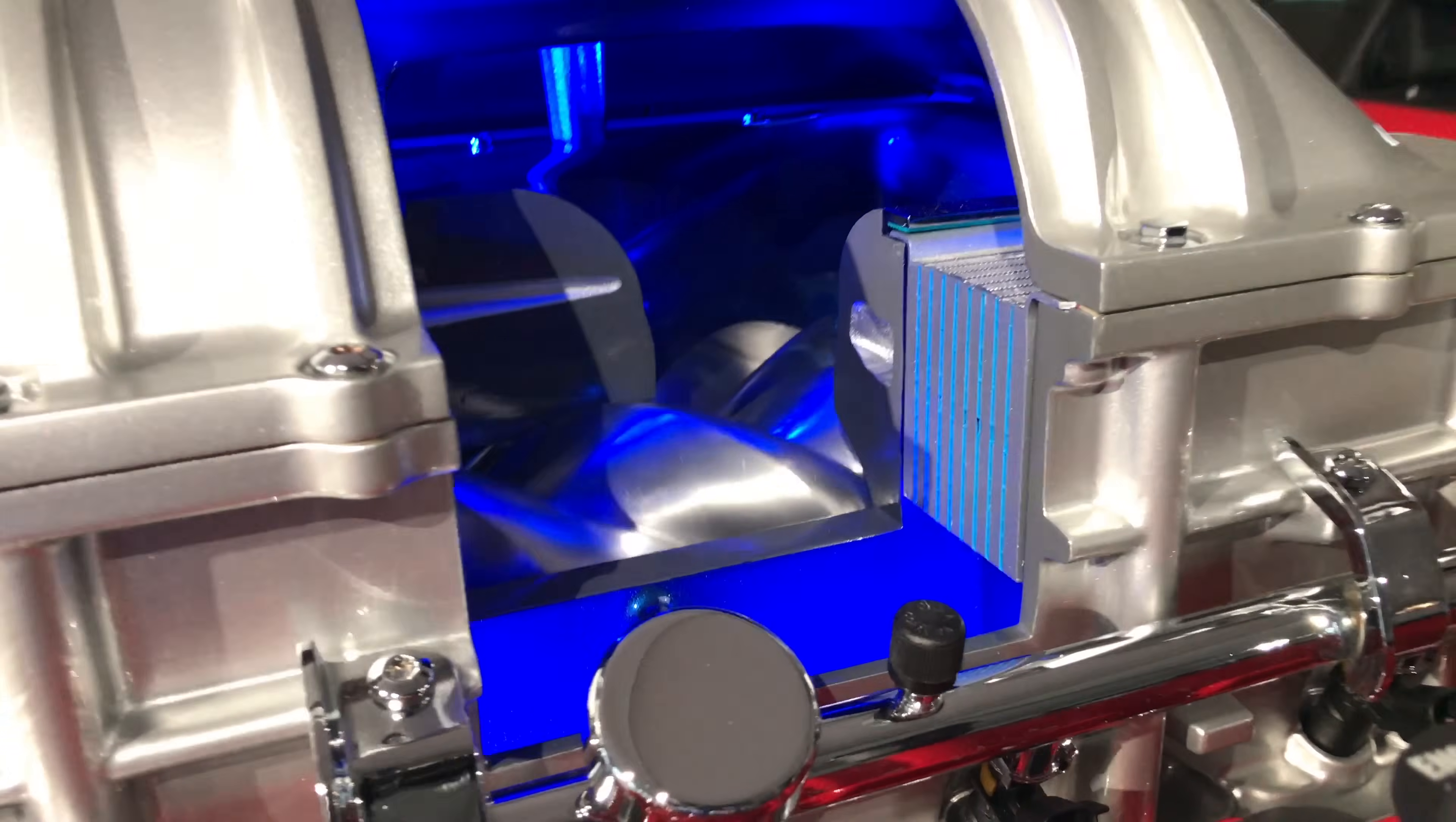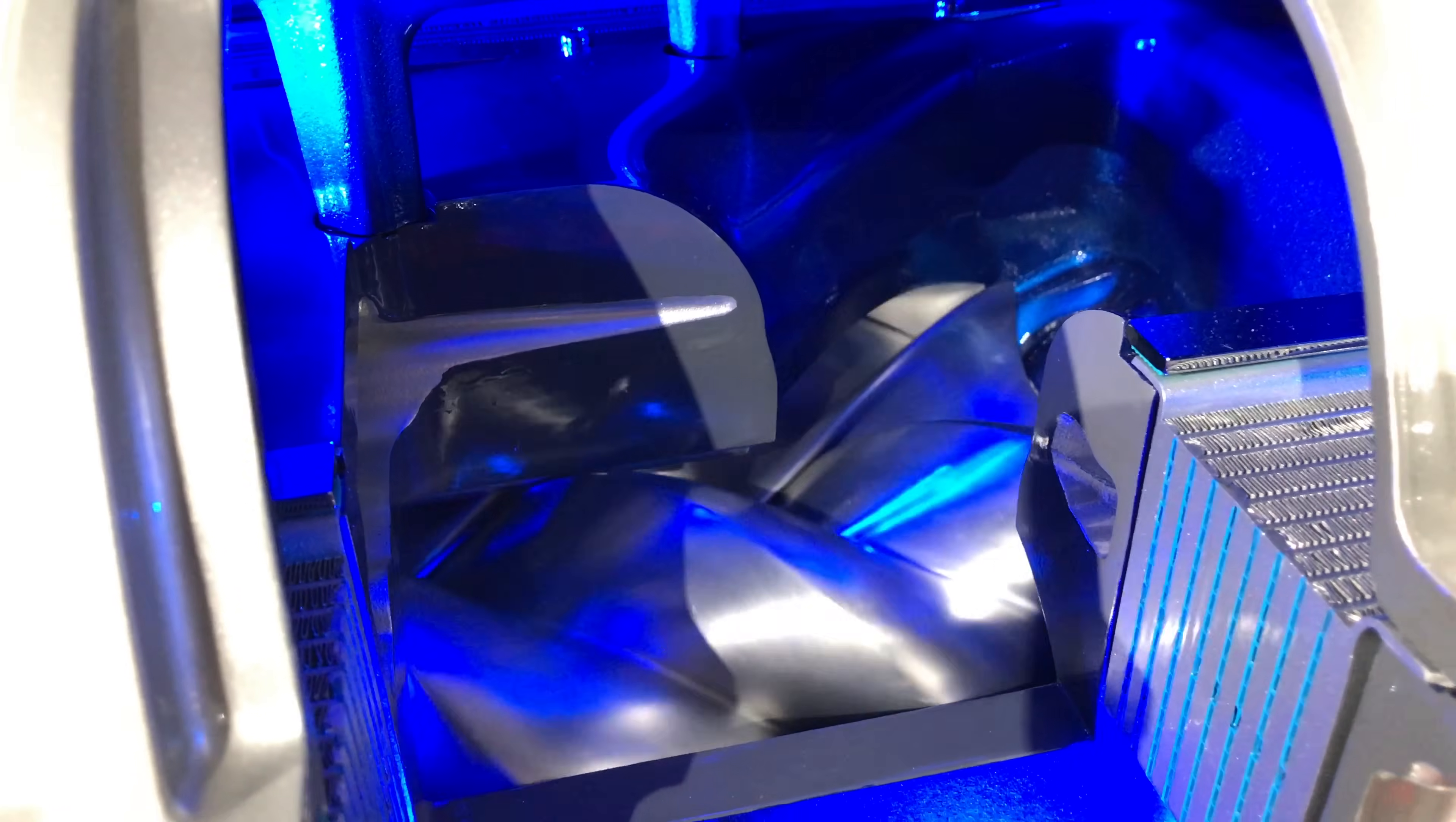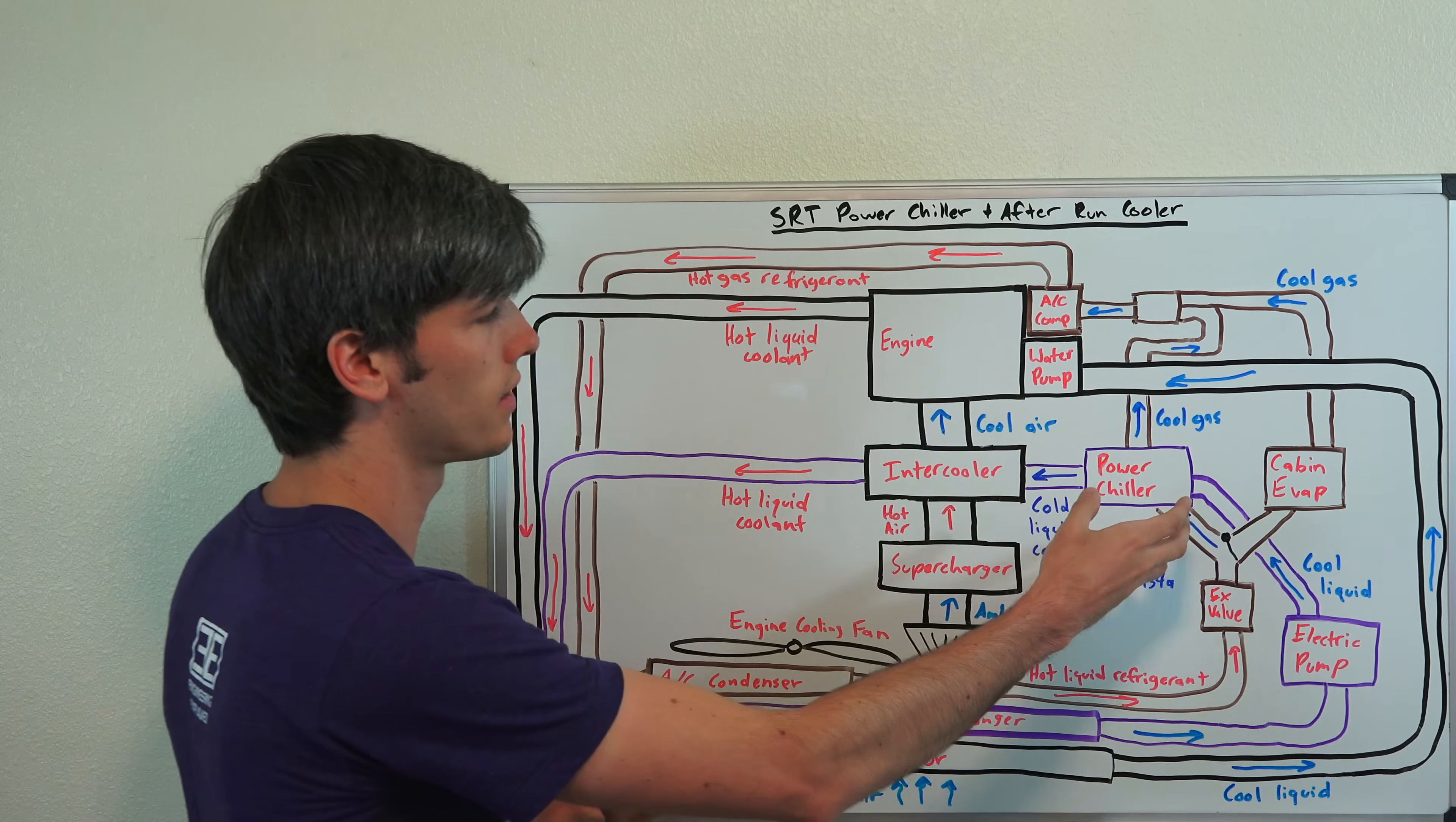So the supercharger actually takes about 90 horsepower to run, but it gives you one bar of pressure, so much more air that you can pack into the engine, and as a result, you make more power than the losses that it takes to run the supercharger. Is it super efficient? Not necessarily. Same with the AC system.